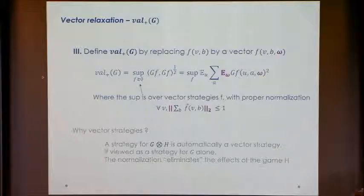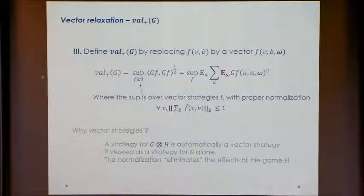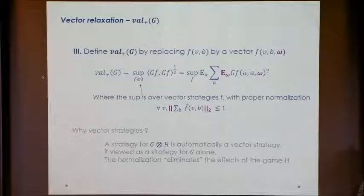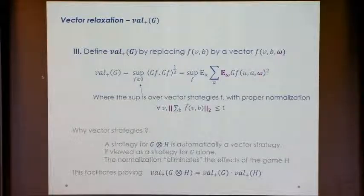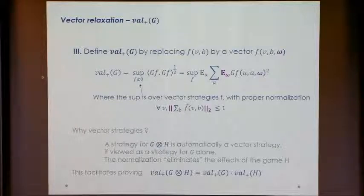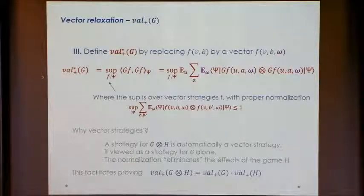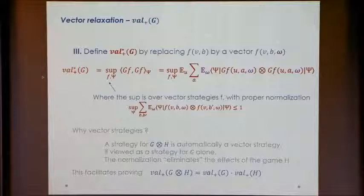If you define Val+ properly, multiplicativity follows: Val+(G tensor H) equals Val+(G) times Val+(H). In the quantum setting, the whole proof follows very smoothly — nothing special needs to be done, it just works. The part requiring much more work is the approximation: you want to show that the vector relaxation didn't ruin the value entirely, i.e., if you have a vector strategy with high value, you can derive from it a regular strategy with similarly high value. That's a rounding algorithm.